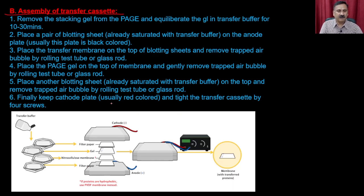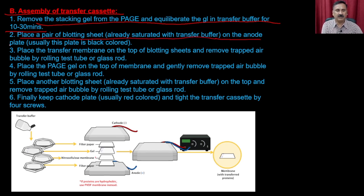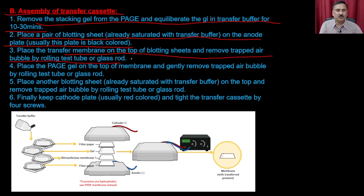For assembling the transfer cassette, remove the stacking gel from the PAGE and equilibrate the gel in transfer buffer for 10 to 30 minutes. Place a pair of blotting sheets already saturated with transfer buffer onto the anode plate (usually black). Then place the transfer membrane on the blotting sheets and remove any trapped air bubbles by rolling a test tube or glass bottle. Then place the gel on the membrane, followed by another blotting sheet dipped in transfer buffer, and then the cathode plate.